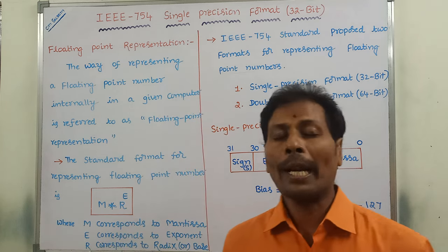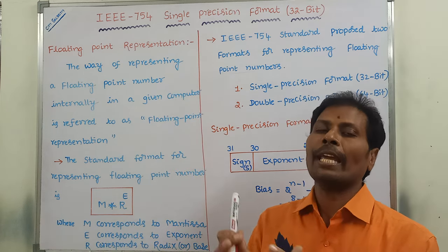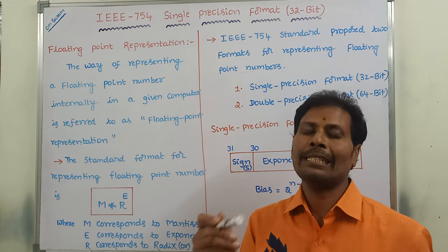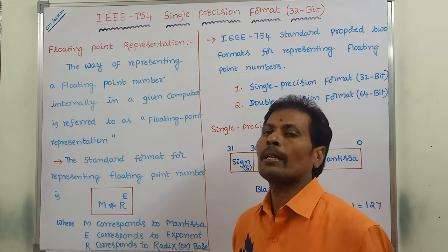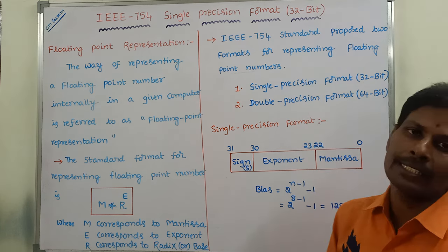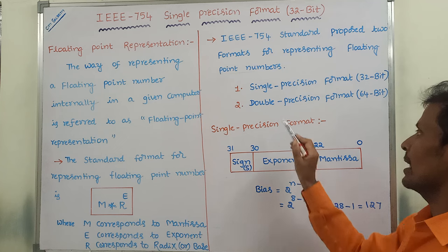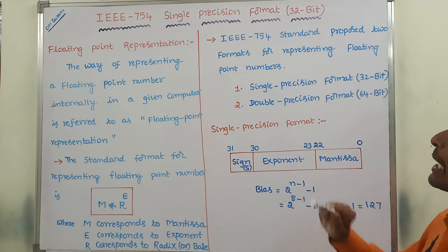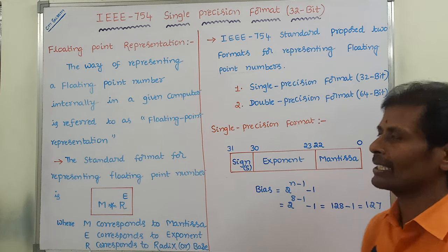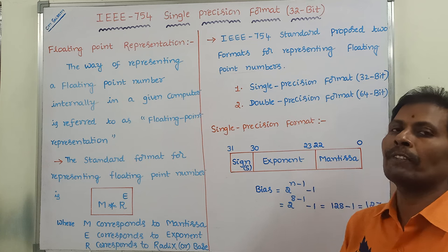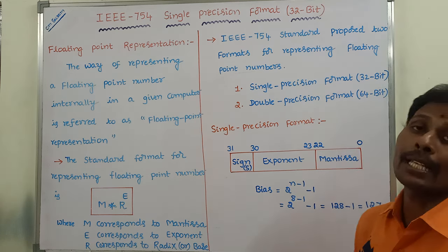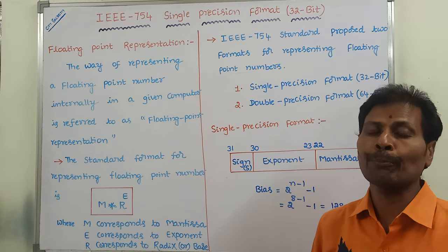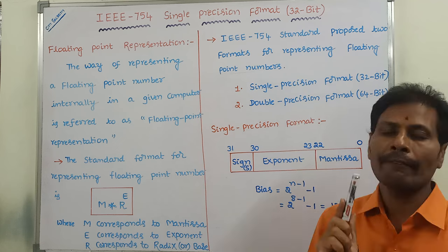IEEE is a standard organization that proposed the standard called 754. Using that standard, floating point numbers are represented in two ways. The first is single precision format, which contains 32 bits. The second is double precision format, which contains 64 bits. These are the two standard formats for representing floating point numbers in the IEEE 754 standard.